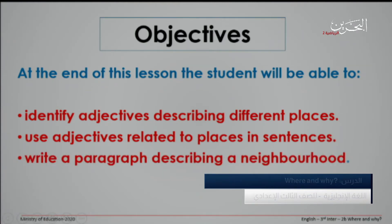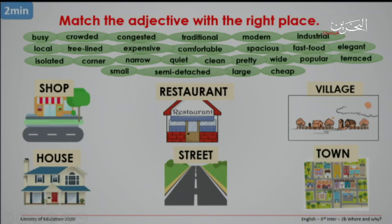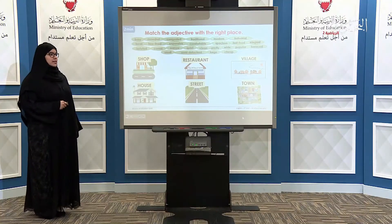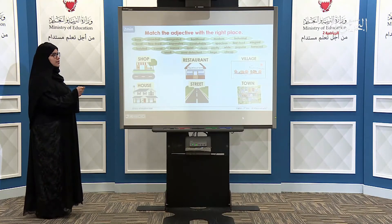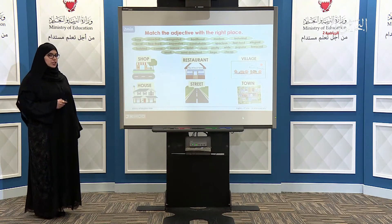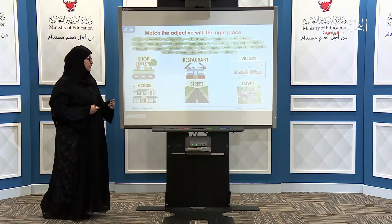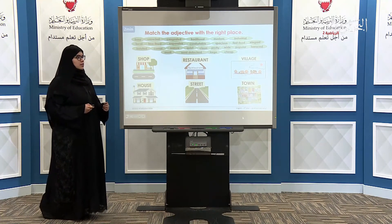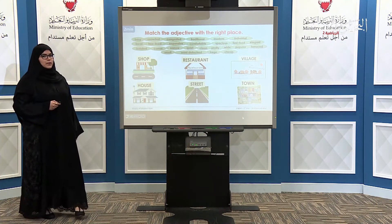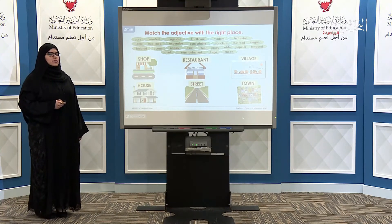We'll start with Task number one. For Task number one, we have adjectives describing places and we have six different places: shop, restaurant, village, house, street, and town. You need to match the adjectives to the places below. You have two minutes to match the adjectives to the places.